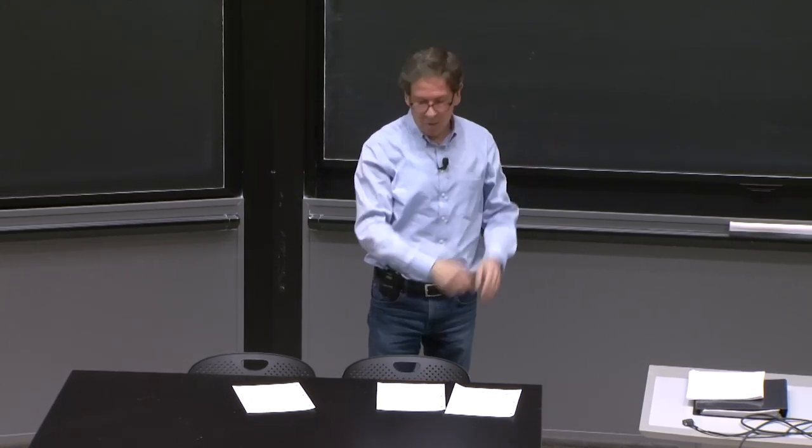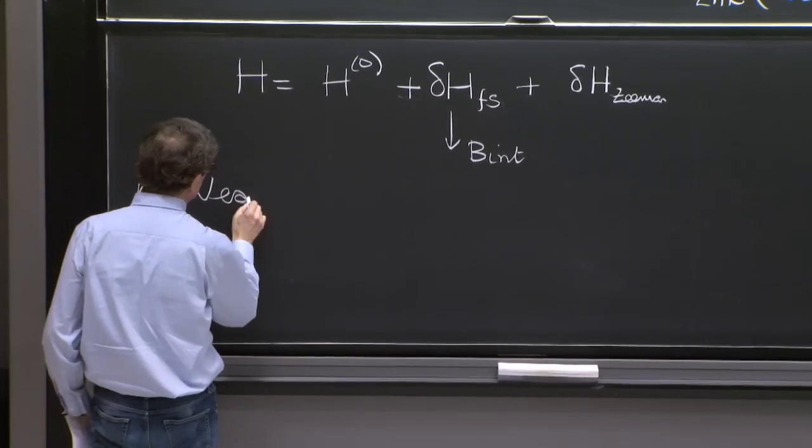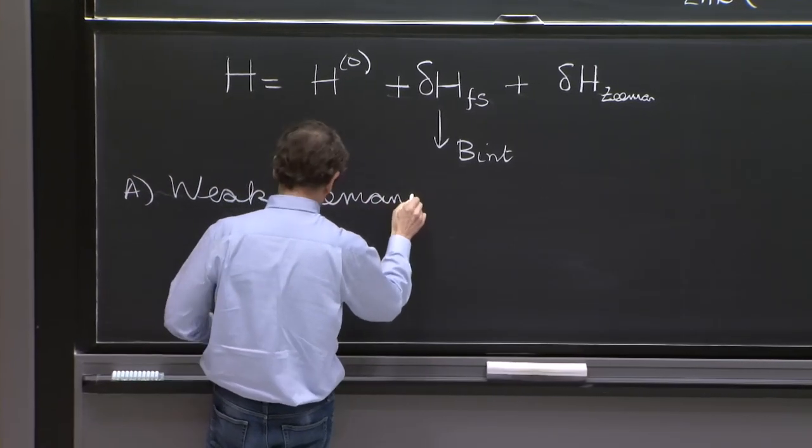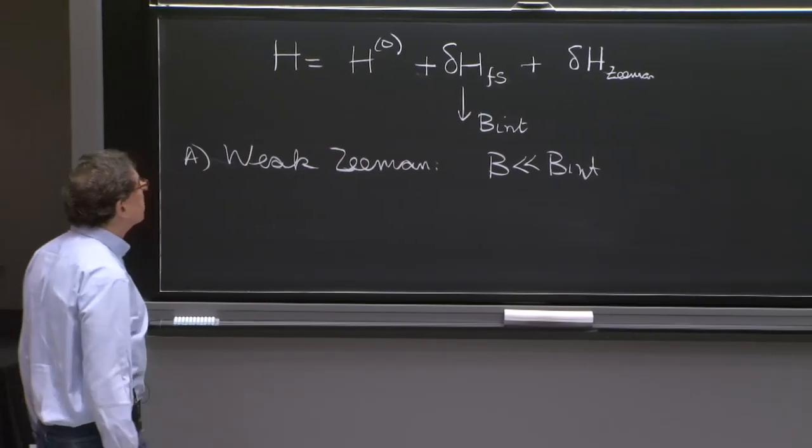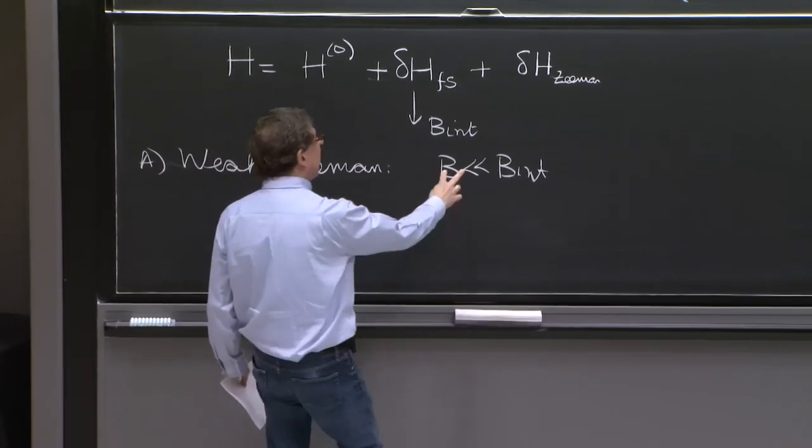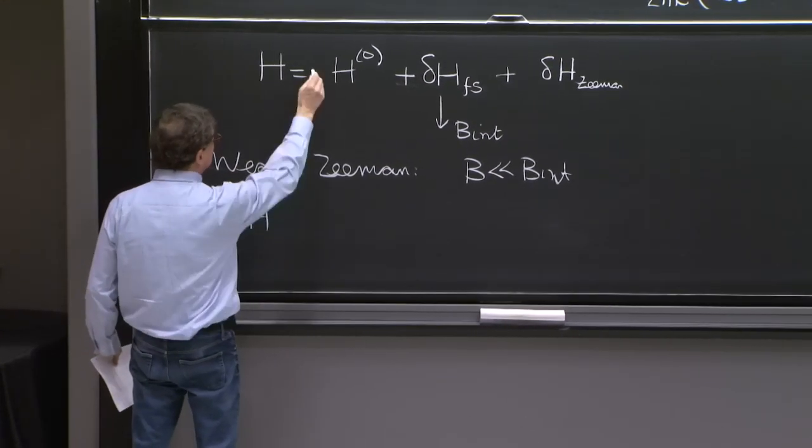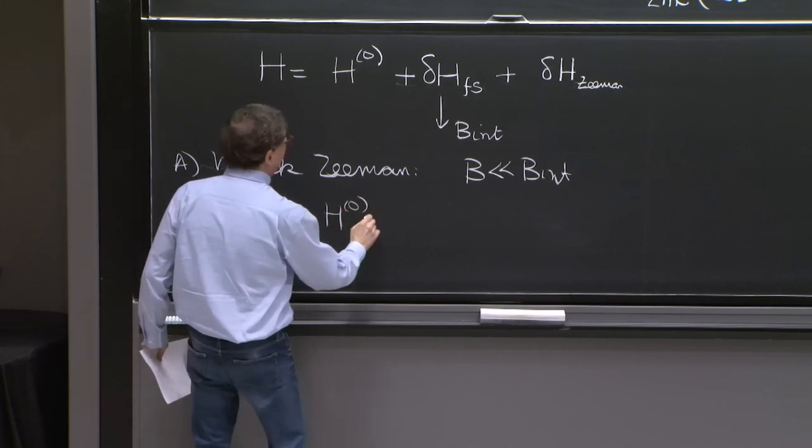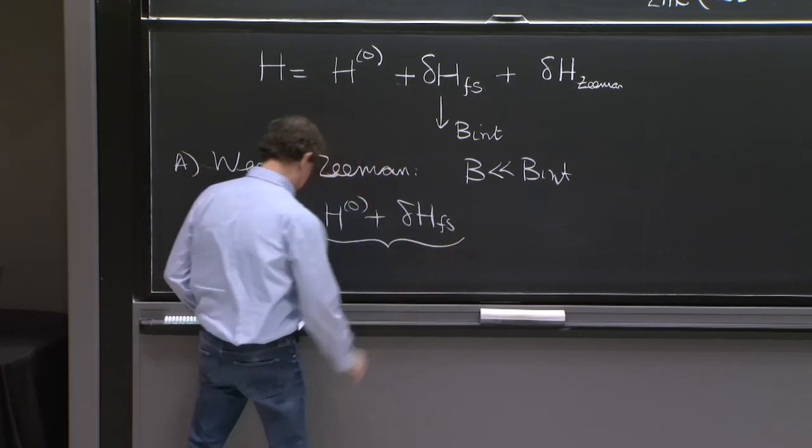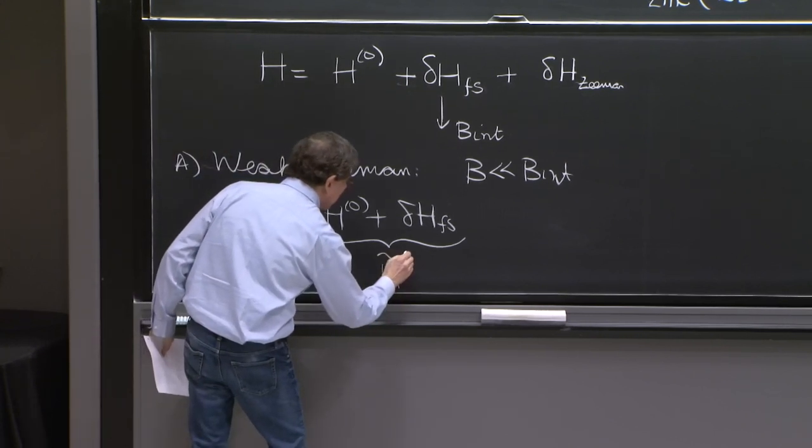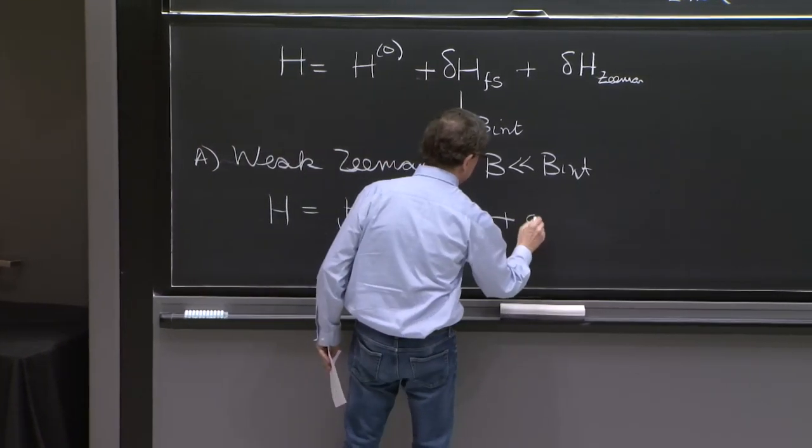And now we can decide whether we have a weak Zeeman effect or a strong Zeeman effect by looking how your external magnetic field compares with this internal magnetic field. So we'll have a weak Zeeman effect when B is much smaller than B internal. And therefore, the effects of Zeeman is going to be smaller than fine structure. So really, when you look at this line and you have the first two terms, you should think of these two terms as your new known Hamiltonian.